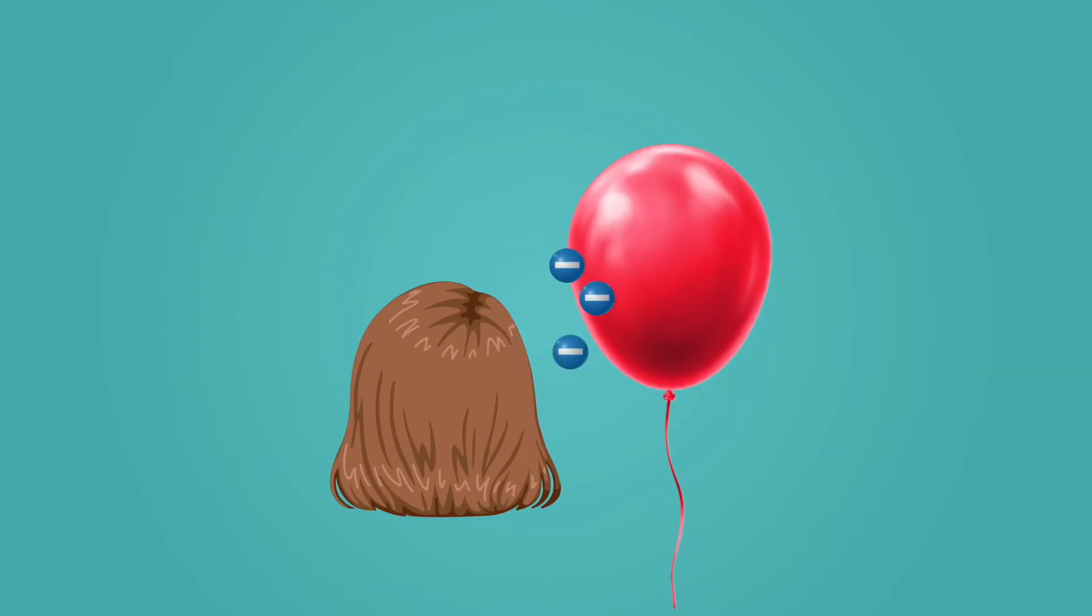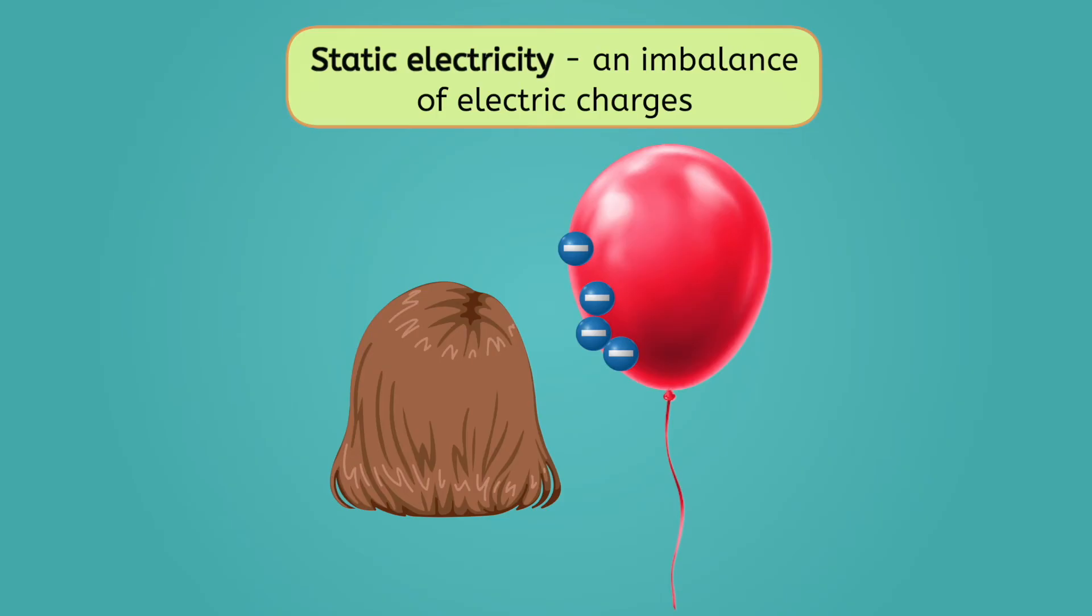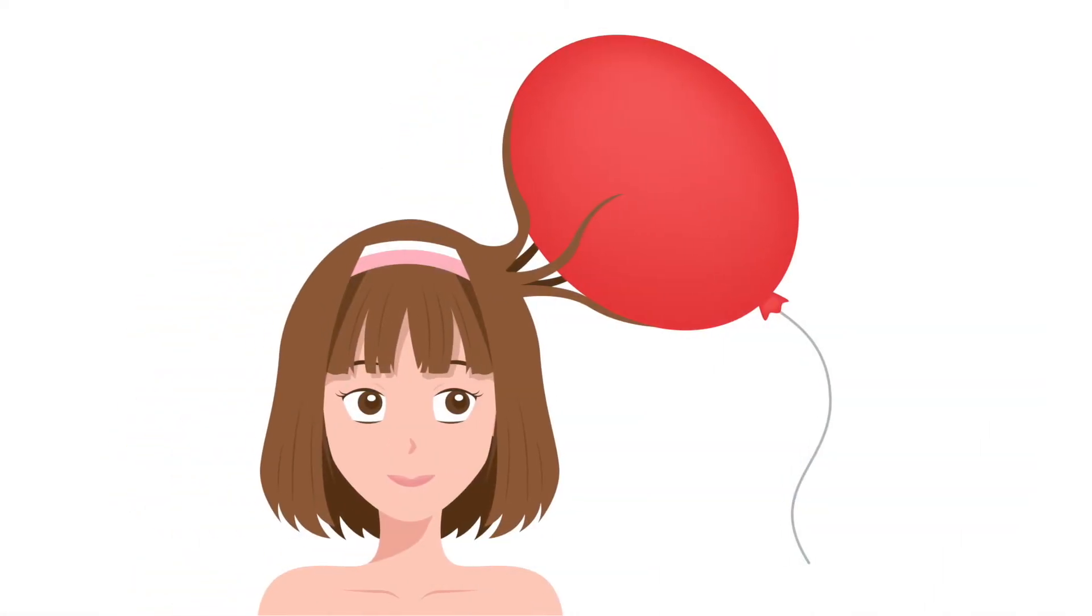In this case, some of the electrons from your hair are transferred to the balloon. As the balloon accumulates more and more electrons, its balance between positive and negative charges is thrown off. This charge imbalance is what we call static electricity. The balloon is now more negatively charged, and your hair is more positively charged. And as we all know, opposites attract. We also know that like charges repel, which is why it looks like your hairs are trying to get away from each other when they're all staticky. All the positive charges are repelling.